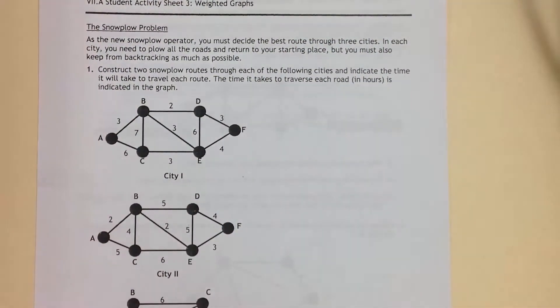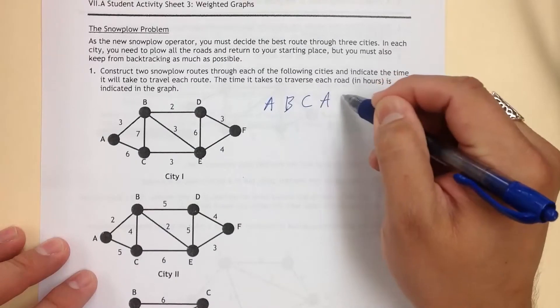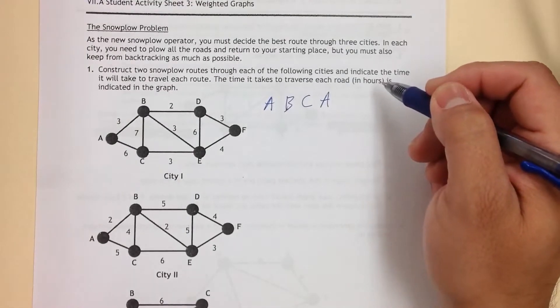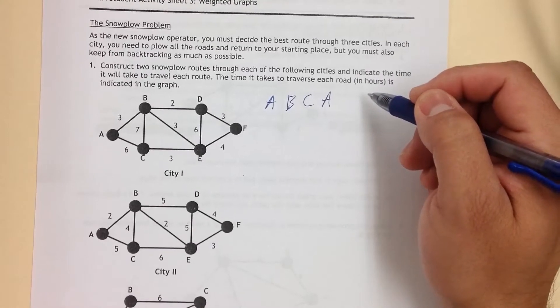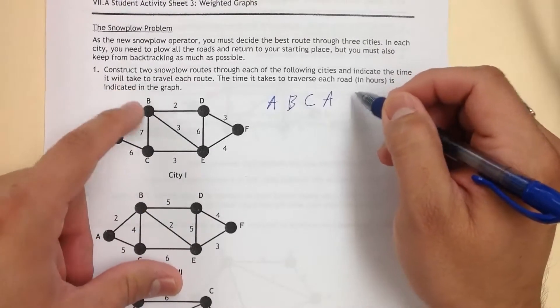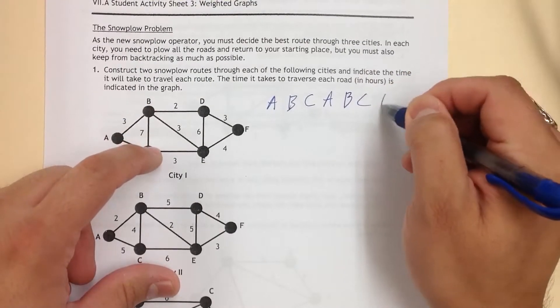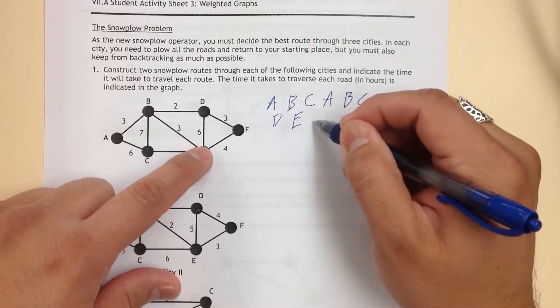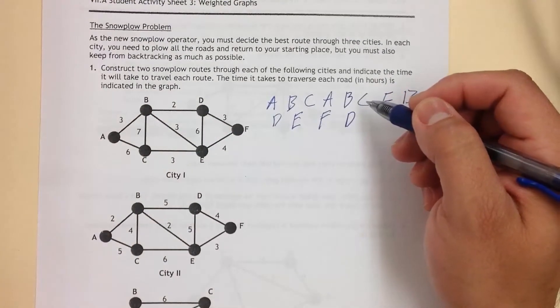This is asking us to construct two snowplow routes through each of the following cities and indicate the time that it will take to travel each route. So it wants us to calculate this route. Now, you can go A to B to C and back to A because all we're doing is cleaning. And it doesn't matter how many times we go back, but we want to go back as little as possible because we don't want to pay these guys overtime. Quite frankly, this is really tough work, but we don't want to pay these guys more than they deserve.